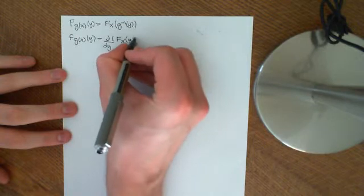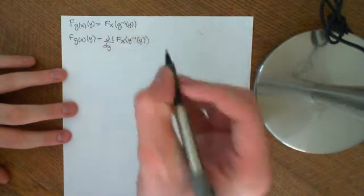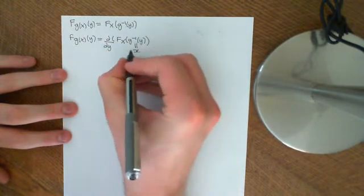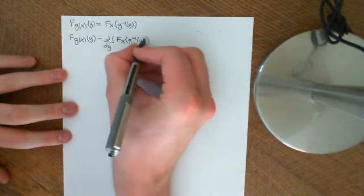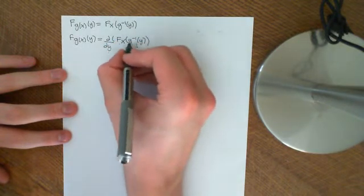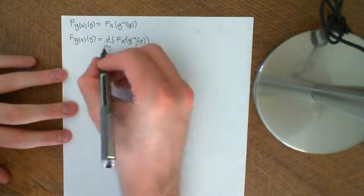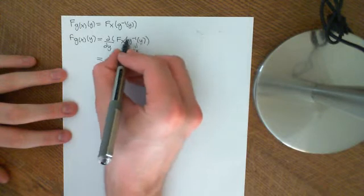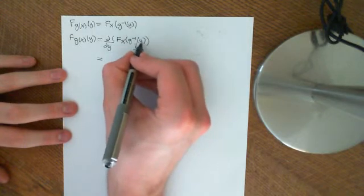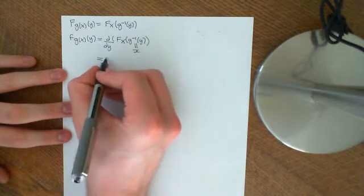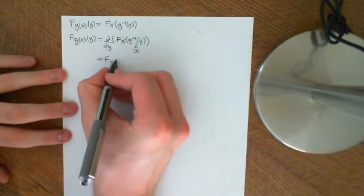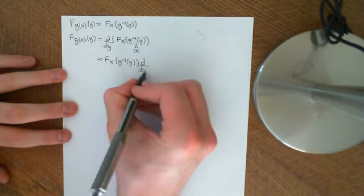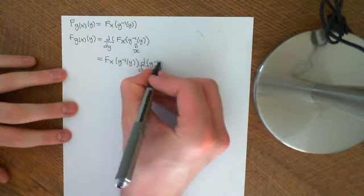So F of X evaluated at G inverse of Y — basically we'll just apply the chain rule. Let's call this thing here X. We'll differentiate this outer function with respect to X, and then we'll differentiate this inner bit with respect to Y. So if we differentiate the outer bit with respect to this value in here, G inverse of Y, which we could just label X, then this becomes the PDF of X evaluated at G inverse of Y. And then we have to take the derivative with respect to Y of G inverse of Y.